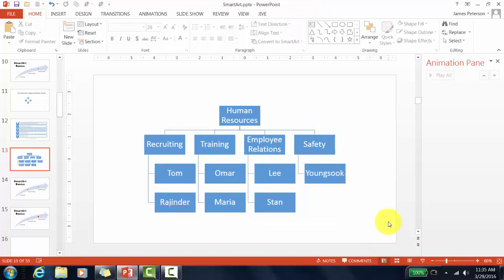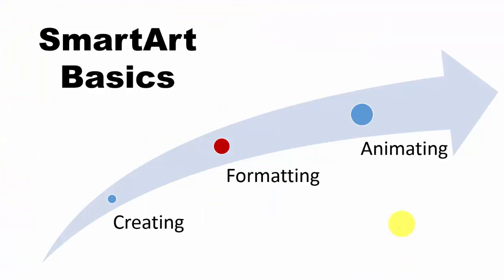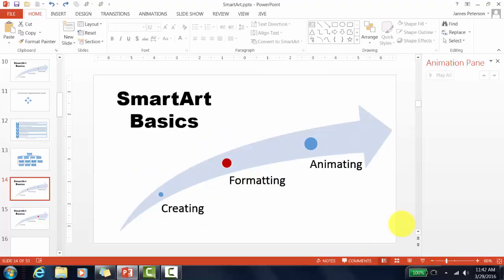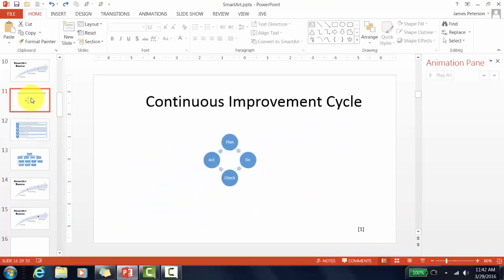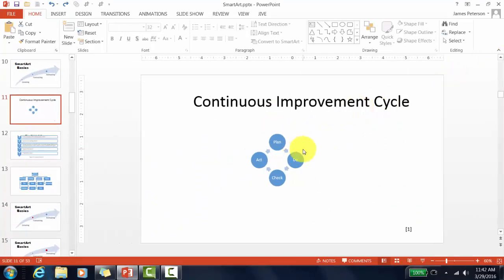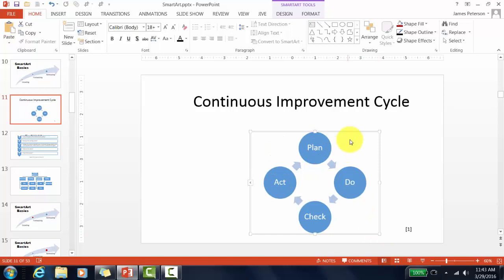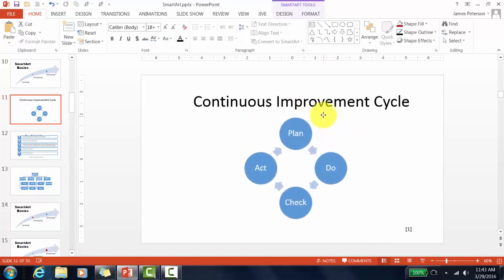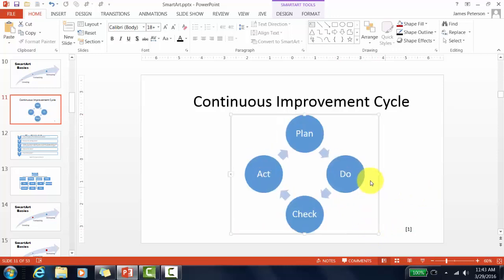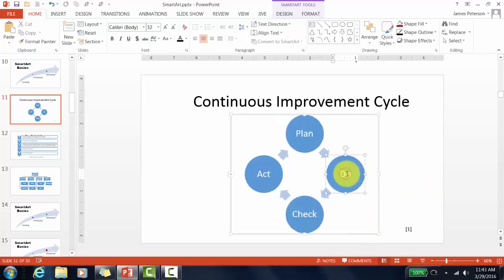Now let's turn to formatting. First, I'll close my animation pane and click on the SmartArt. It's too small, so I'll grab a corner and drag to make it larger — I try to make my SmartArt as big as possible. I always test the font size by clicking on the text; I don't want the font size to be less than 24.